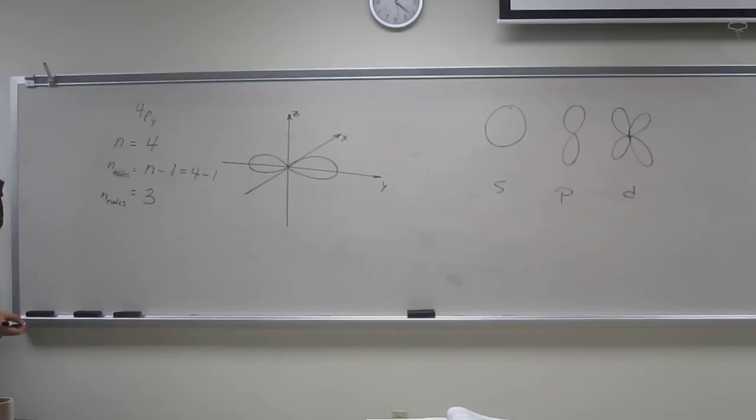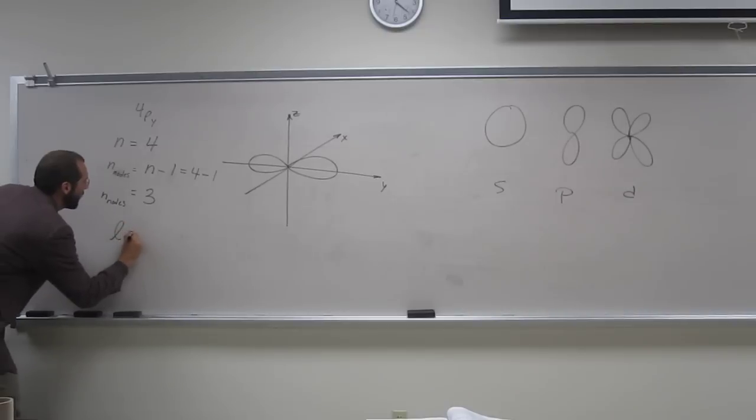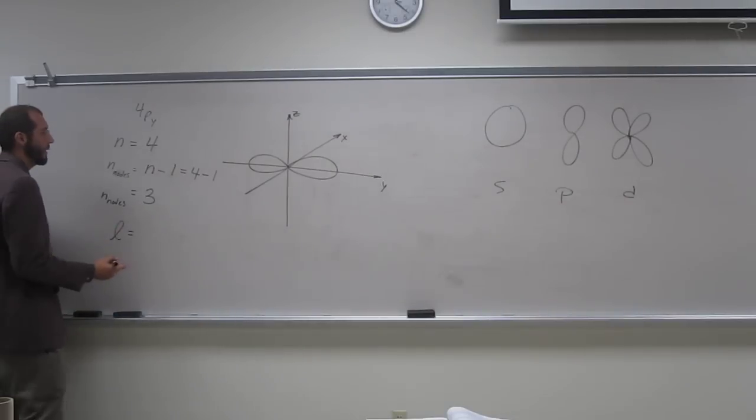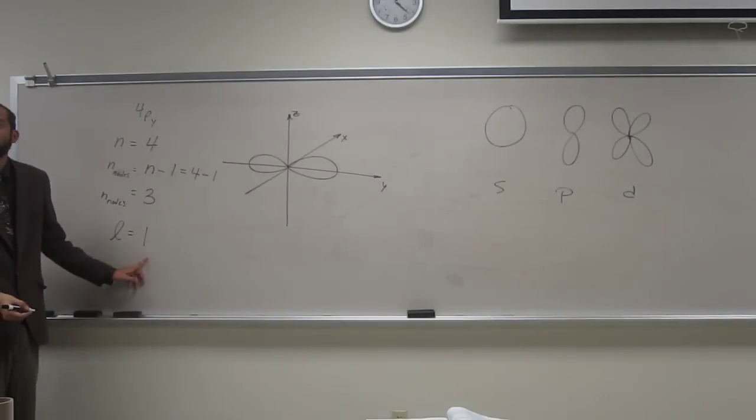Also, we know something else, we know L, the angular momentum quantum number. That is, in this case, if it's a P orbital, it's 1. So that tells you the number of angular nodes.